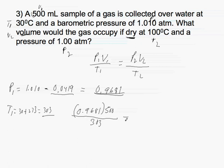...our P2, which is one atmosphere. Our V2 is our unknown, divided by our T2, which is going to be 100 degrees Celsius plus 273, which is going to give us 373 Kelvin.